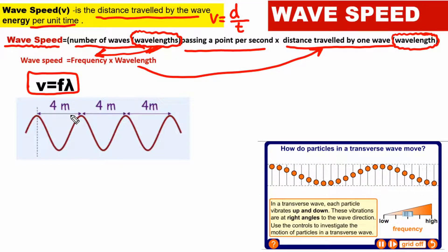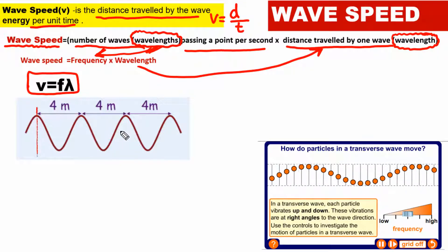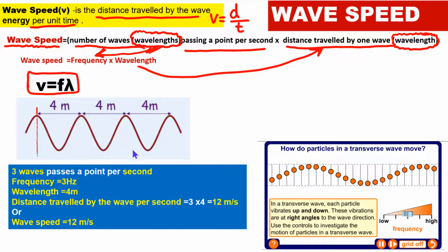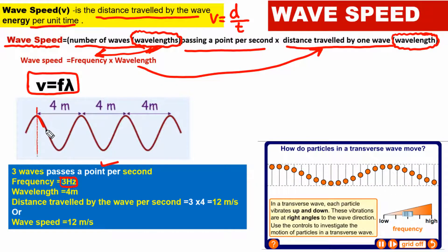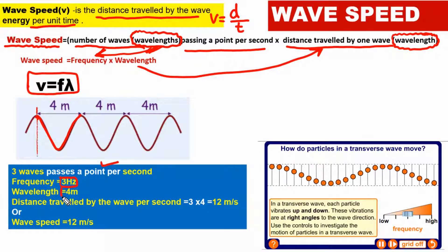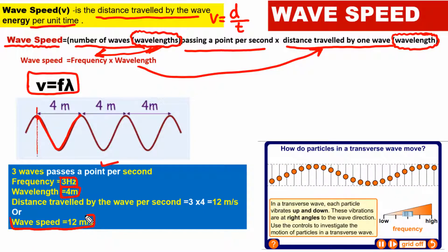Let's understand this with a simple example. Say three waves pass a point in one second, so the frequency is 3 Hz. If the wavelength is 4 meters, then the wave speed is simply 3 times 4, which equals 12 meters per second.